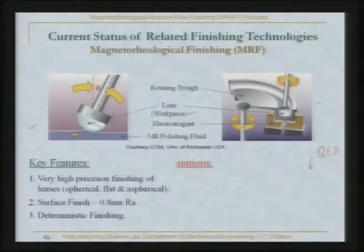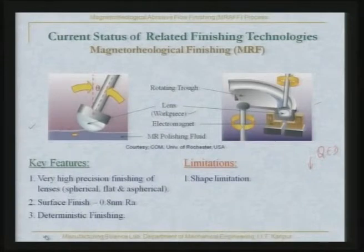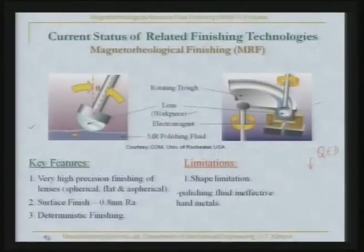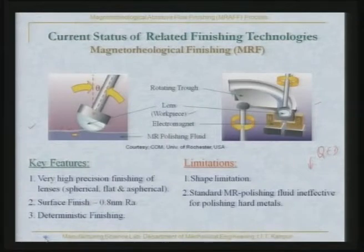That is why this MRF process and abrasive flow finishing process were both combined and we developed a process called magnetorheological abrasive flow finishing process. Certain limitations of MRF are: first, shape limitation — only certain shapes can be finished because of the configuration of the setup; second, standard MR polishing fluid is ineffective for polishing hard materials.